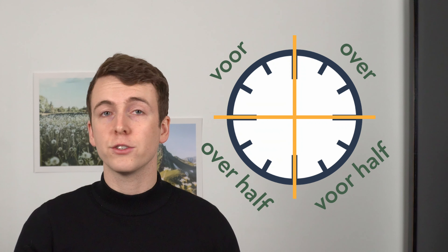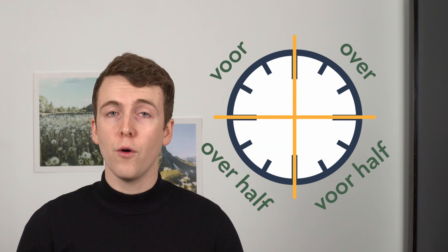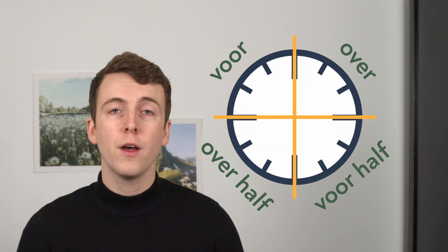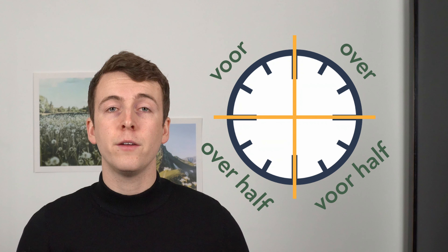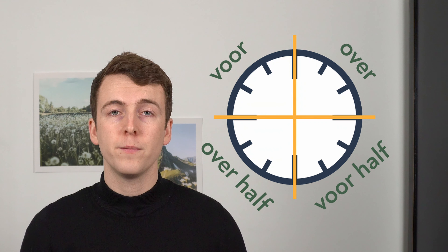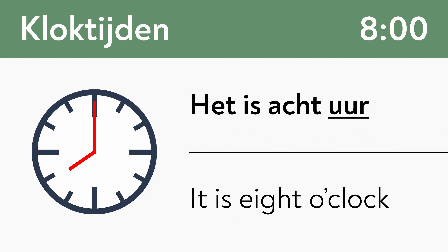We have a section called 'over', 'voor half', 'over half', and 'voor'. Let's say it's 8 o'clock in the morning — we then say 'acht uur'. We use the word 'uur' only for a full hour.